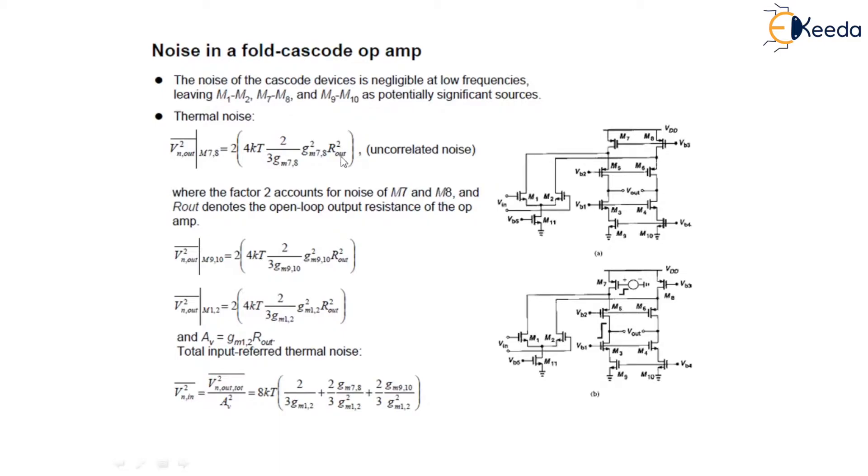In this case, the thermal noise is given as V²n,out(M7,M8) equals 2×4KT×(2/3gm²M8)×R²out for uncorrelated devices, where the factor 2 accounts for noises of M7 and M8, and Rout denotes the open loop output resistance of the op-amp.